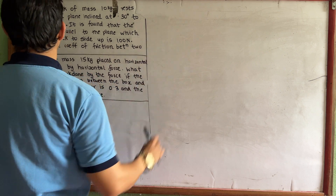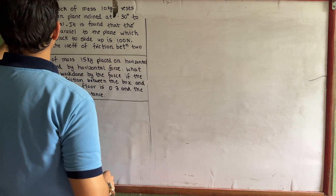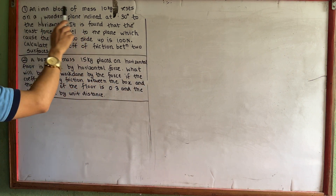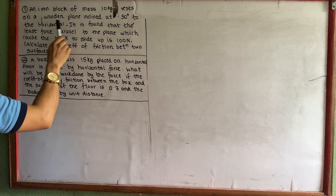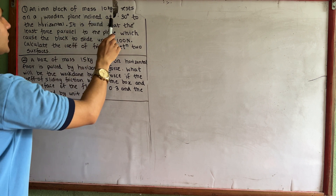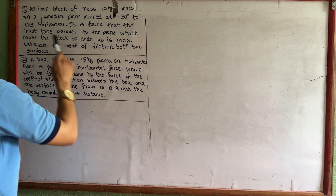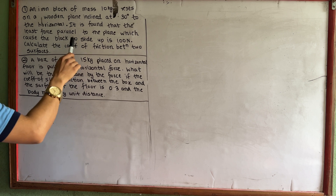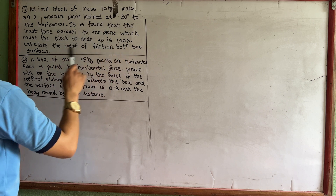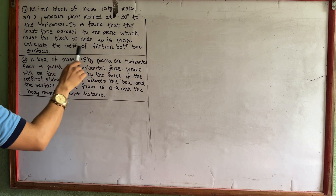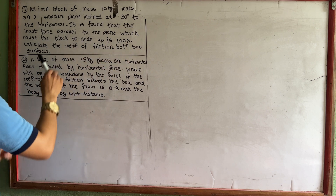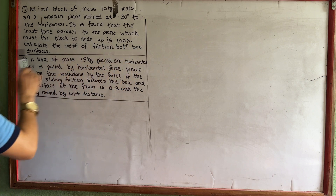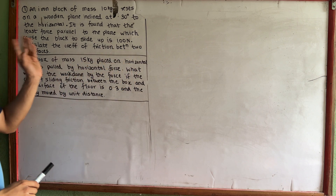I am going to ask you a question. An iron block of mass 10 kg rests on a wooden plane inclined at 30 degrees to the horizontal. It is found that the least force parallel to the plane which caused the block to slide up is 100 N. Calculate the coefficient of friction between the two surfaces.